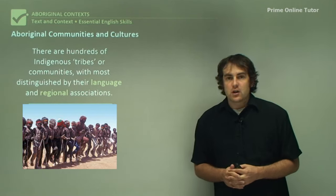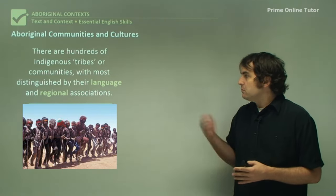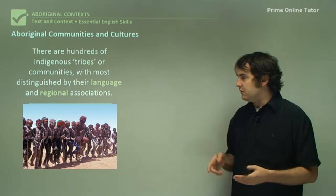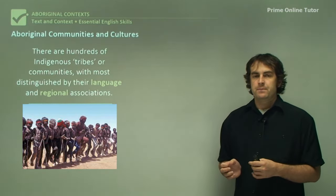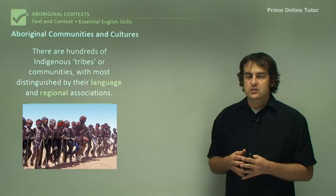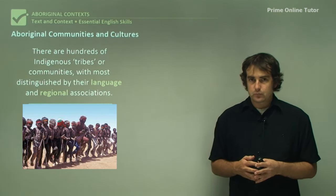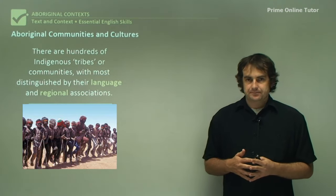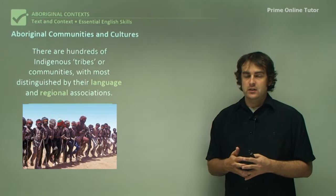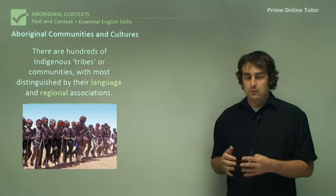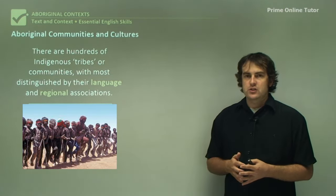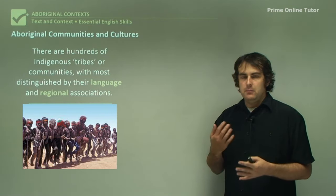Moving on to communities and cultures - there are hundreds of Indigenous tribes, most distinguished by their language or regional association. There were 250 languages at least before Europeans arrived, and most communities were divided by those languages. Some communities had even more than one language, but most had their own language and their own distinctions - their own places where they would gather food, hunt, and live. Most Aboriginal nations had a number of different communities living within them, some joined together and some a bit separated, and the regional and language associations are essentially how you group a lot of Indigenous communities.